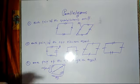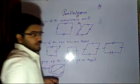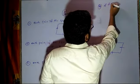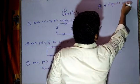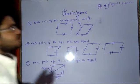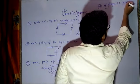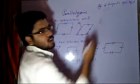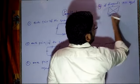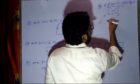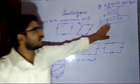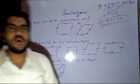The fourth condition: if in a quadrilateral, the diagonals bisect each other — or if the diagonals are equal — then also we can say the figure is a parallelogram. For example, if ABCD is given and AC is equal to BD, then we can directly say that this figure is a parallelogram.